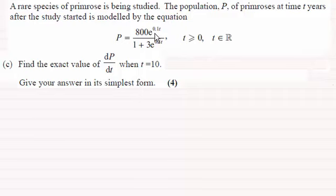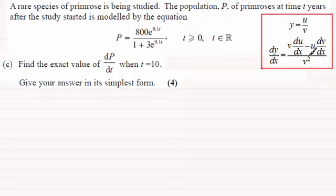So in order to find the differential of this we've got both functions of t on the top and the bottom, and the best way we could do this is by the quotient rule. And you should be familiar with the quotient rule, which you'll find in your formula book.